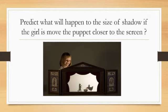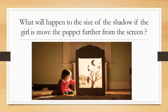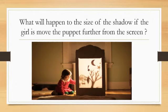It depends on the position of the object relative to the light source and the screen. Predict what will happen to the size of the shadow if the girl moves the puppet further from the screen. That means the puppet is closer to the light source, so the shadows get bigger. Just look at where the position of the object is and where the position of the light source is.